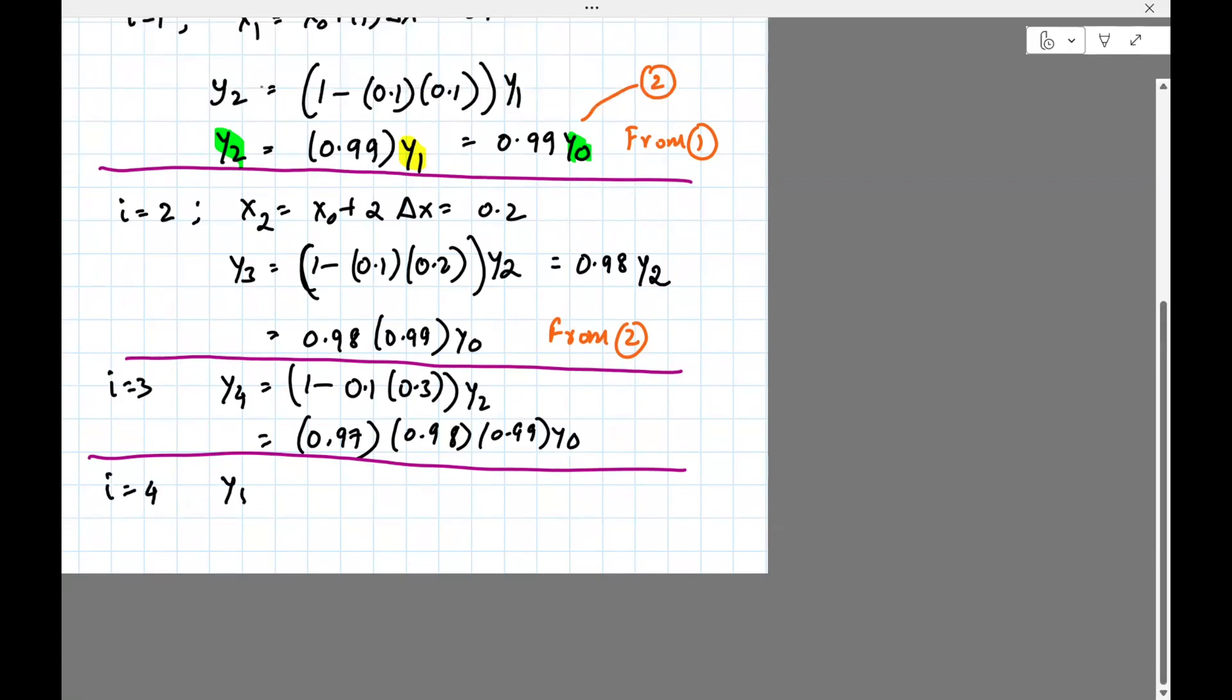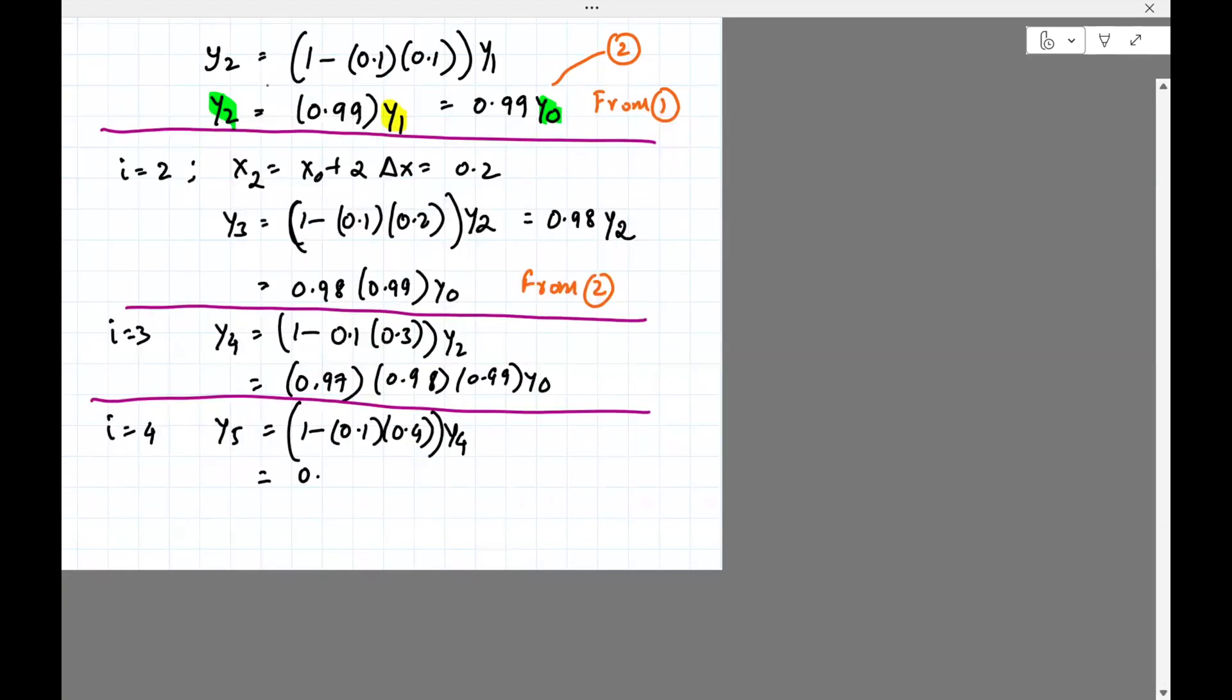i equals 4, y5, 1 minus 0.1 times 0.4 y3, y4, 0.96 y4, but then that will be in terms of y0, so 0.97, 0.98, 0.99 y0, comes out to be 0.9702, is that right? No, sorry, it's not that, this is wrong. It's 0.9035 y0.